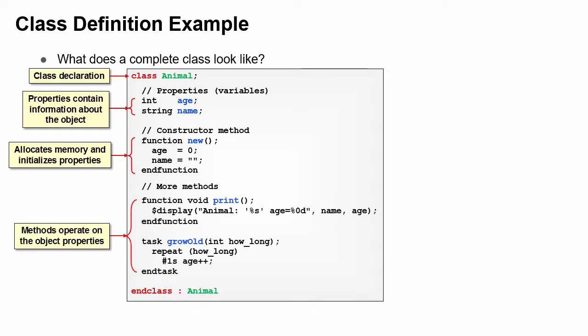Methods operate on variables inside and outside the object. Now you can see how a class is a blueprint that shows what the object looks like.